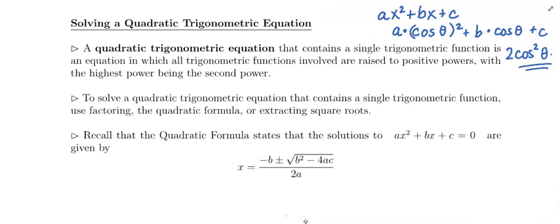Solving a quadratic trigonometric equation very much parallels solving ax² + bx + c = 0. To solve a quadratic trigonometric equation that contains a single trigonometric function, use factoring, the quadratic formula, or extracting square roots. The quadratic formula states that solutions to ax² + bx + c = 0 are given by x = (−b ± √(b² − 4ac)) / 2a.